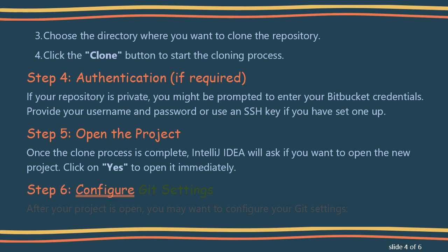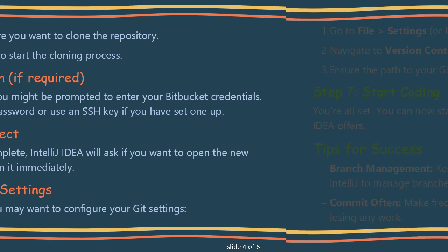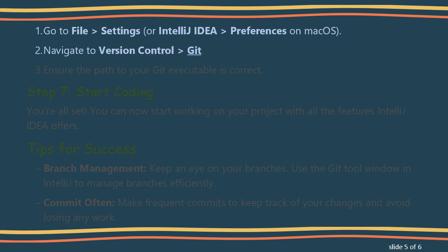Step 6: Configure Git Settings. After your project is open, you may want to configure your Git settings. Go to File > Settings, or IntelliJ IDEA > Preferences on macOS. Navigate to Version Control > Git and ensure the path to your Git executable is correct.